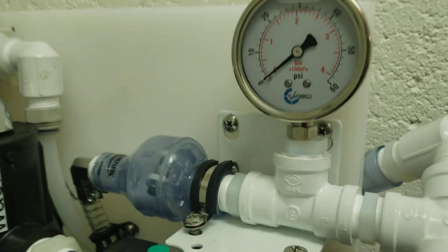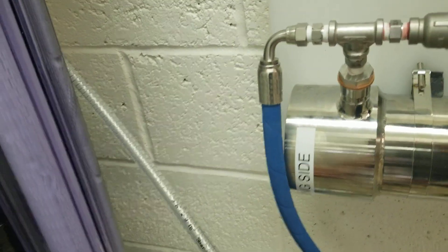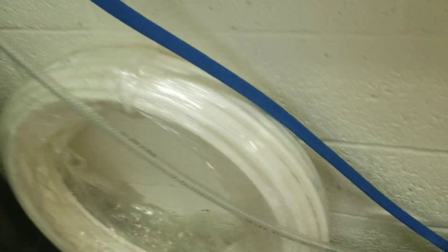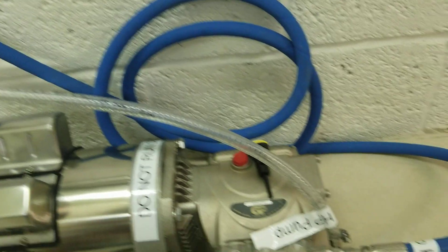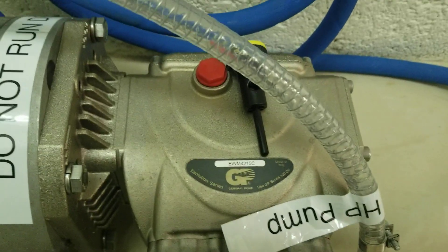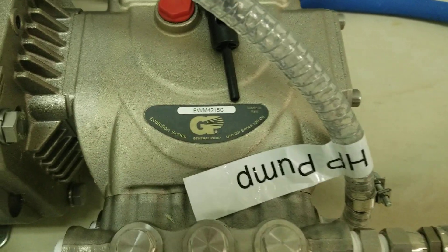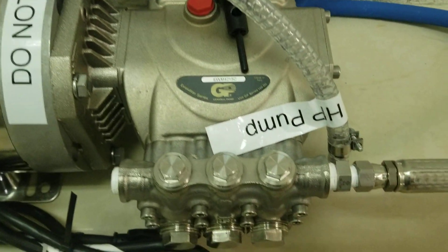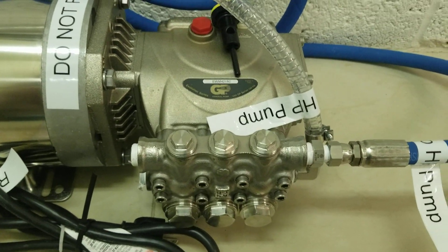And then from the prefiltration, we have a steel braided PVC pipe that goes to the high pressure pump. The high pressure pump is made by General Pumps. It is a 4.2 gallon per minute, all stainless ceramic pistons.